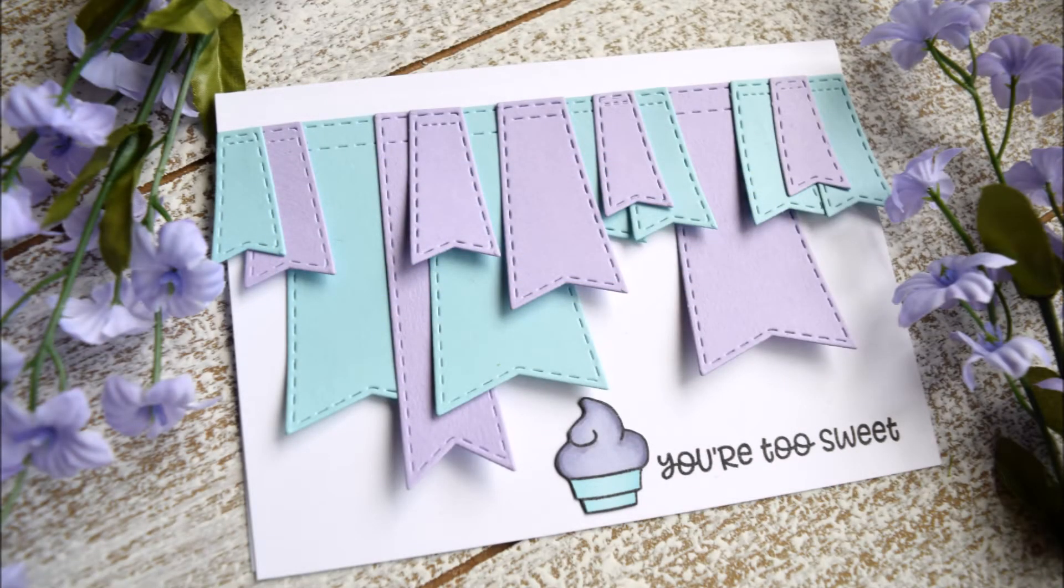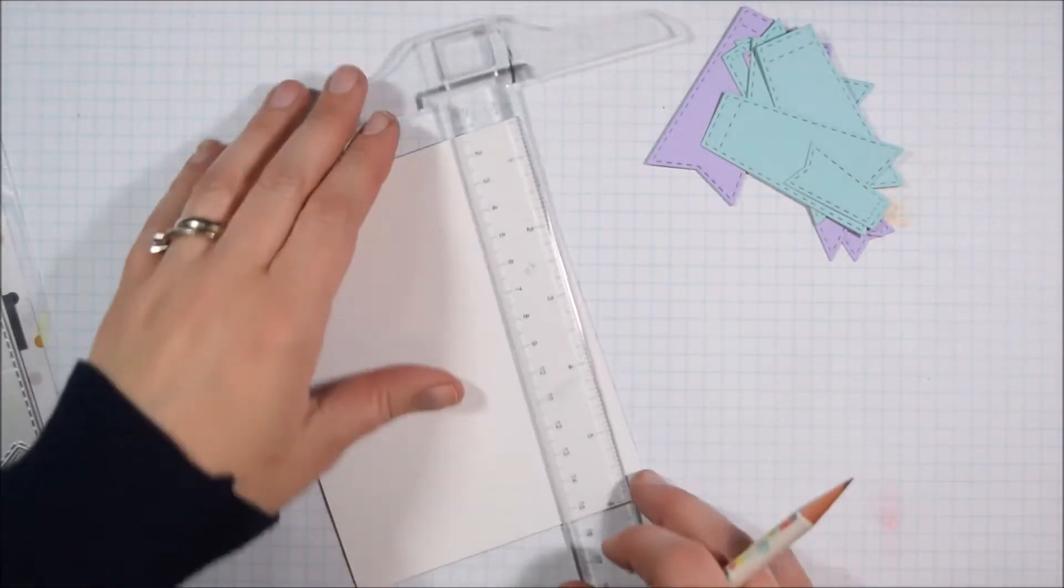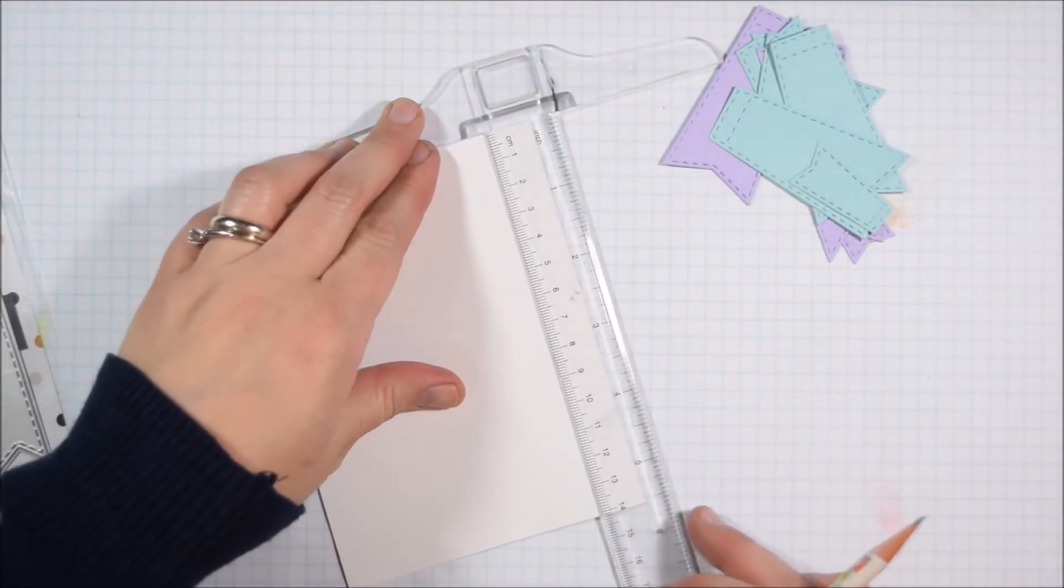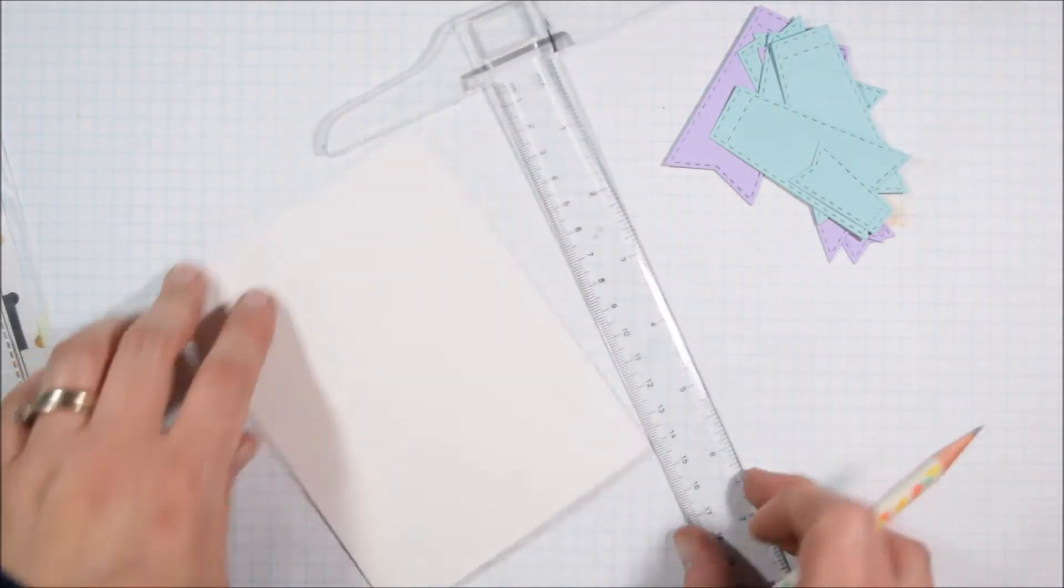Hello crafty friends, it's Jess from JessCrafts.com and today I'm here with a card for the Cat Scrappiness store. I am featuring the Punny Snacks stamp set as well as the brand new die set called Stitched Flags.